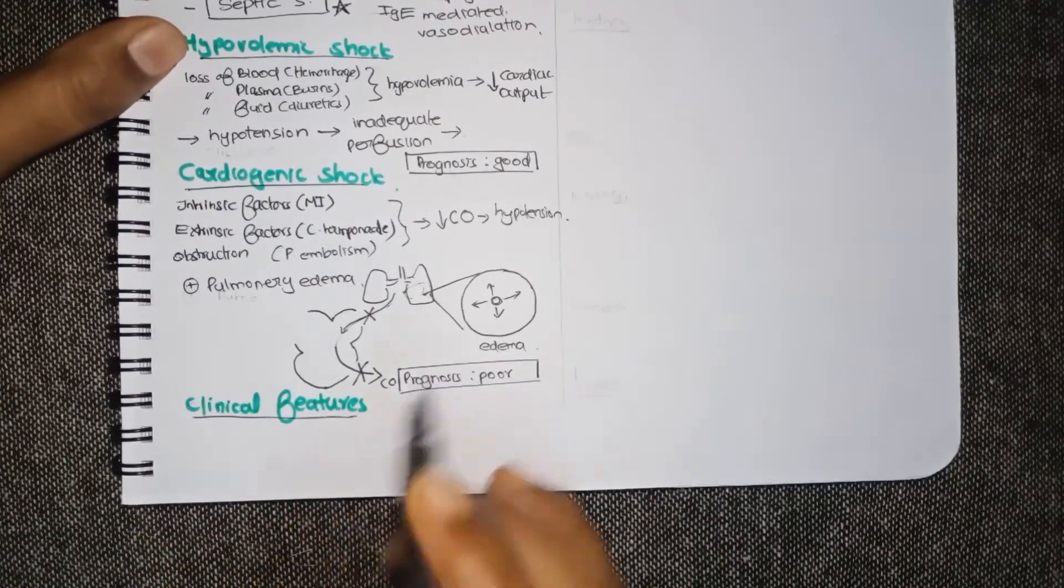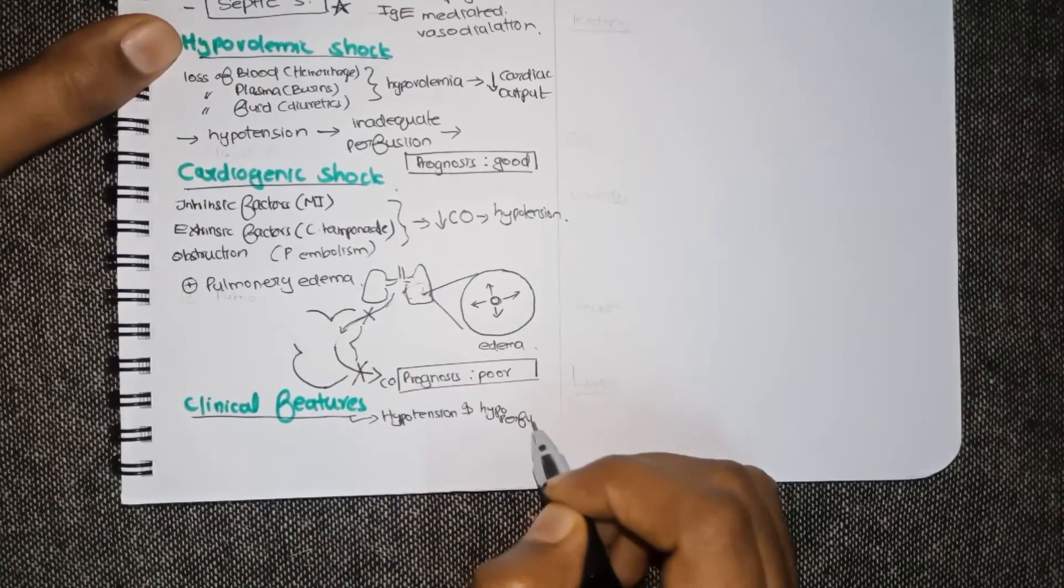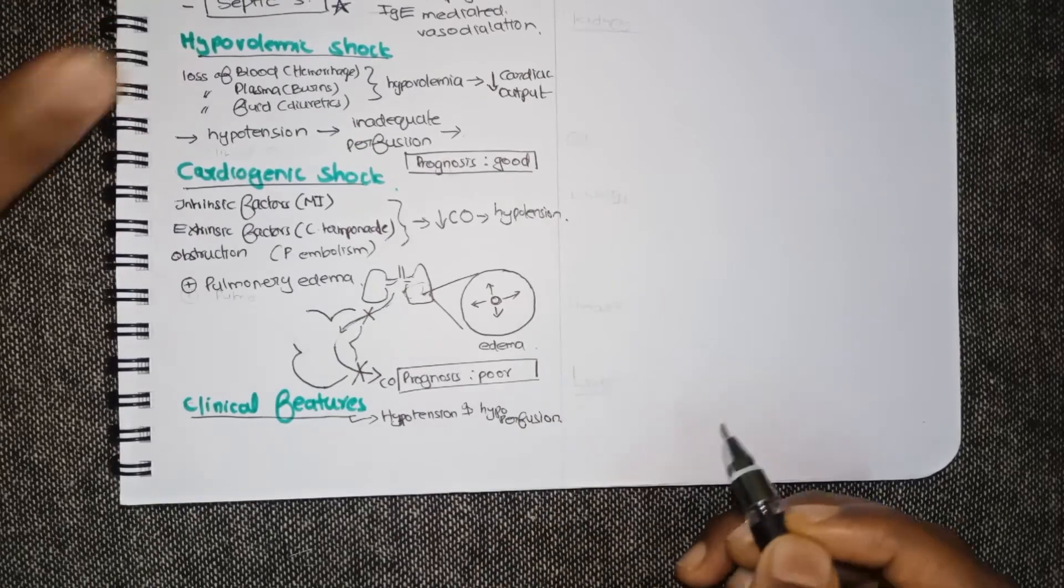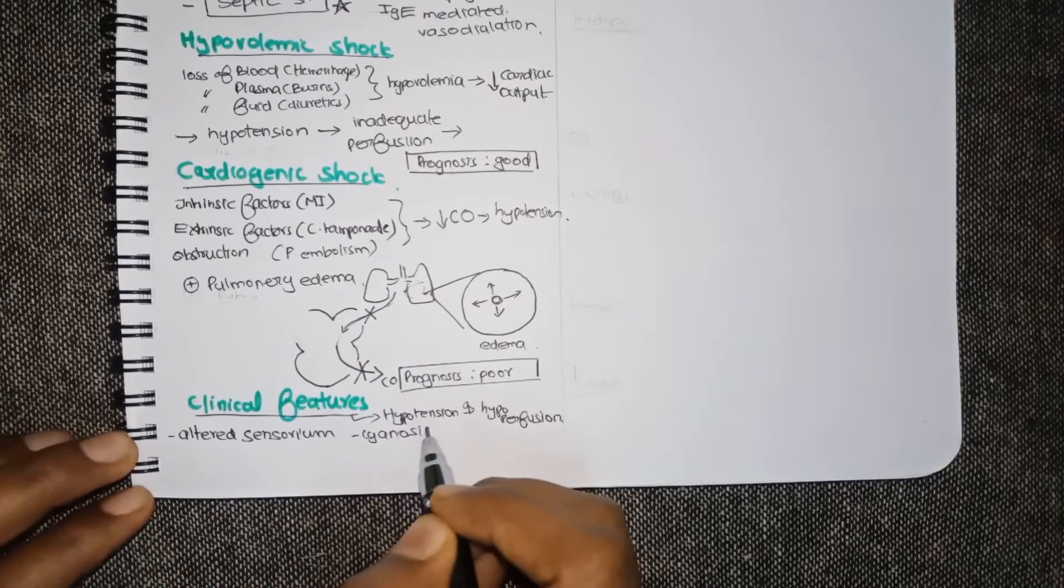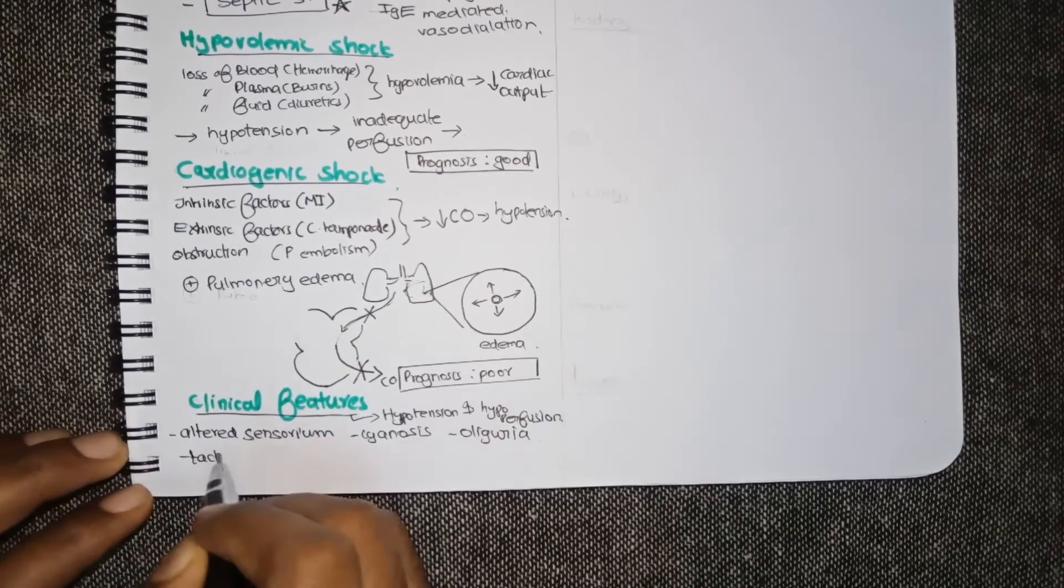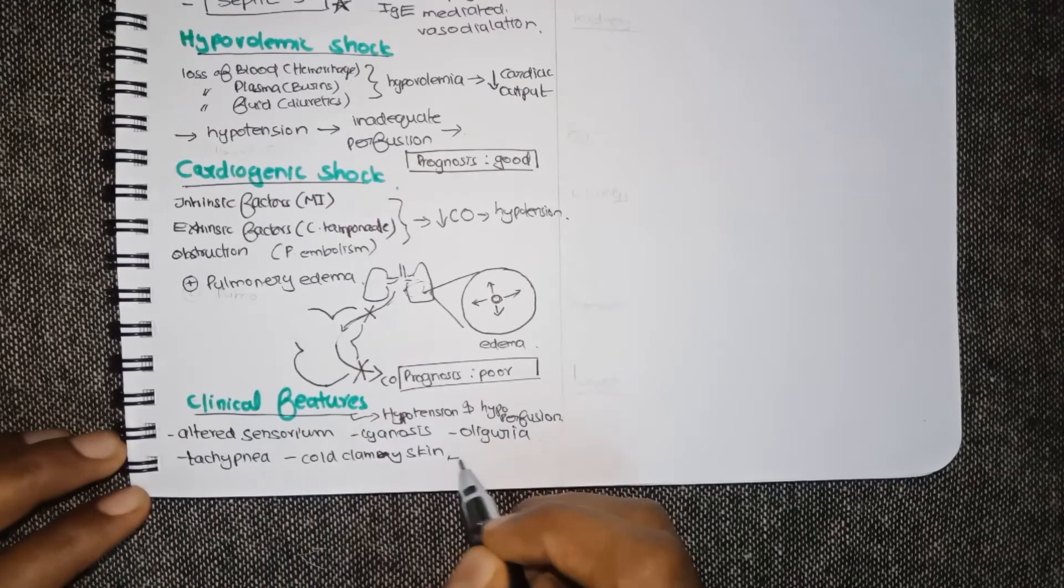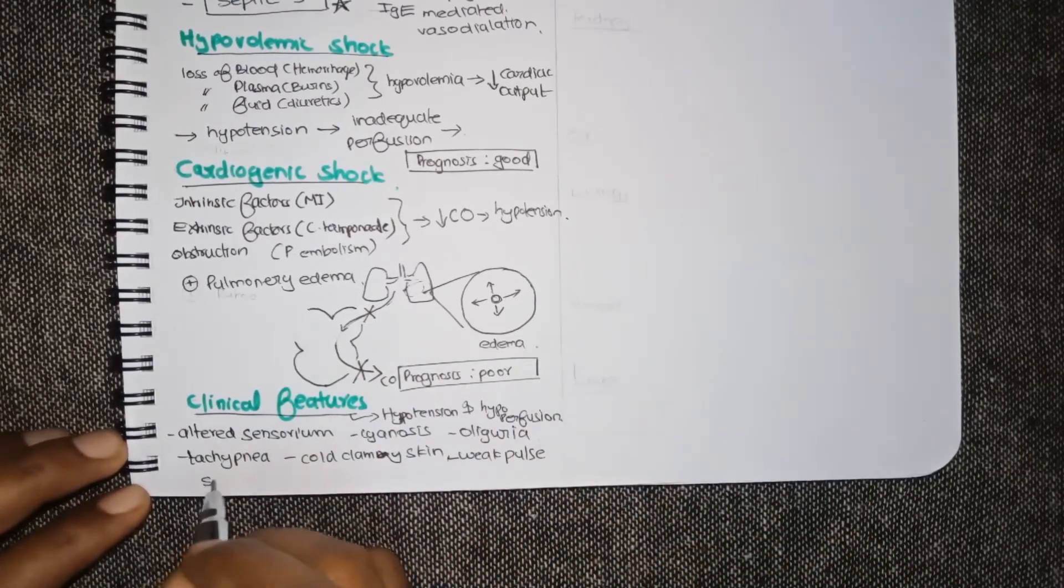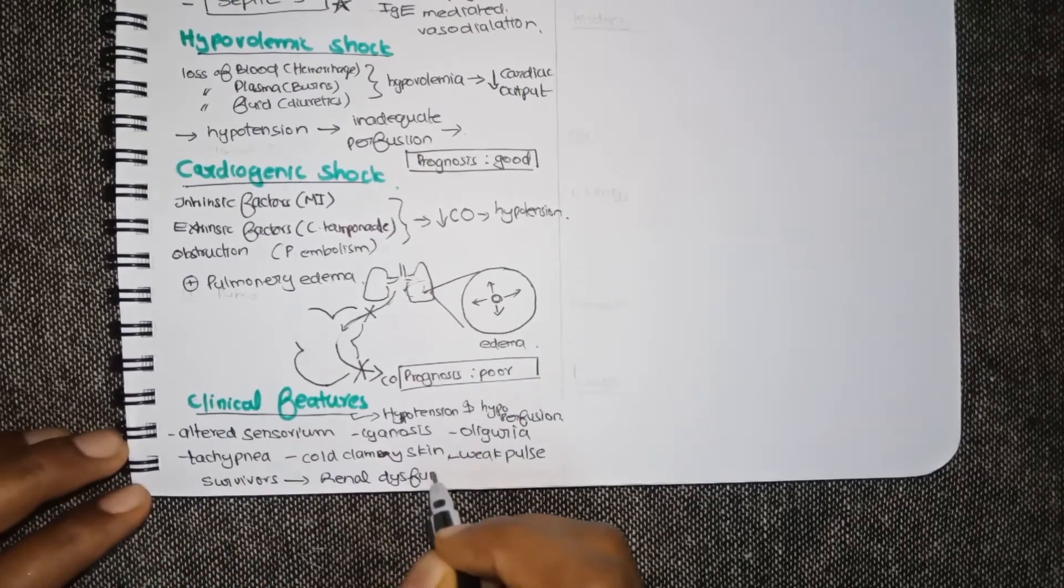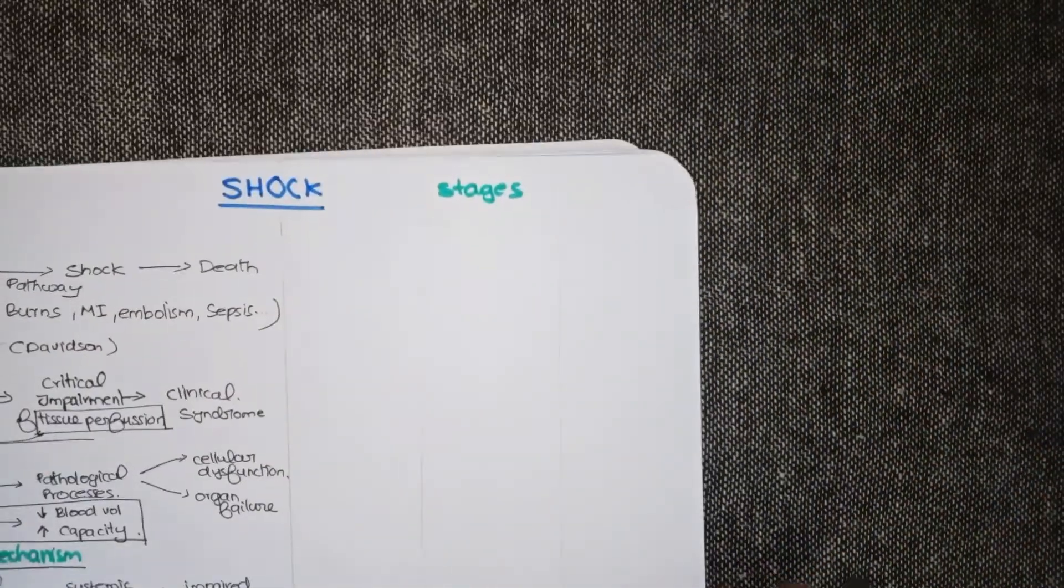Now coming on to the clinical features. They are mostly due to the resultant hypotension and hypoperfusion. They include altered sensorium, cyanosis, oliguria, tachypnea, cold and clammy skin and weak pulse. The patient who survived may have the possibility of adrenal dysfunction.